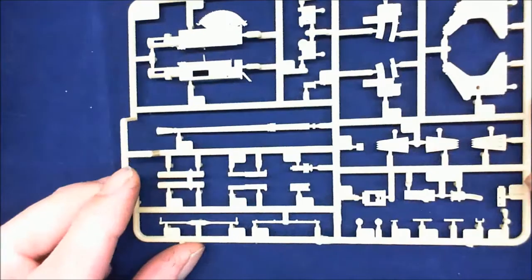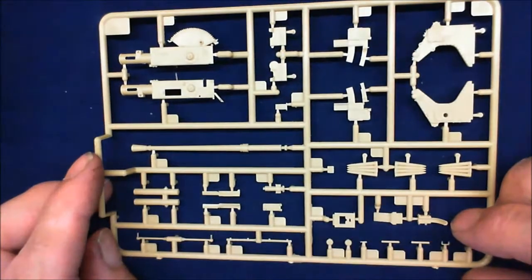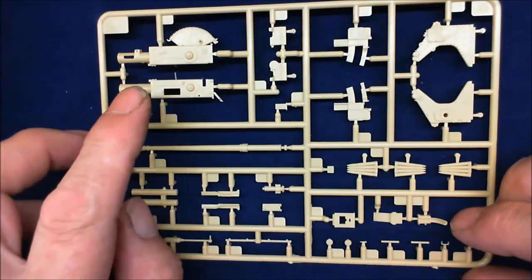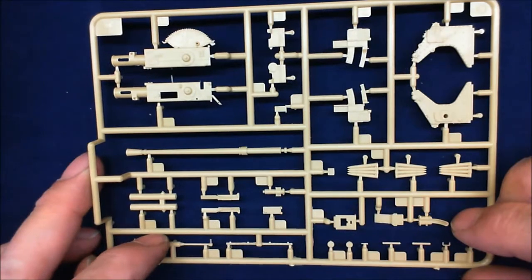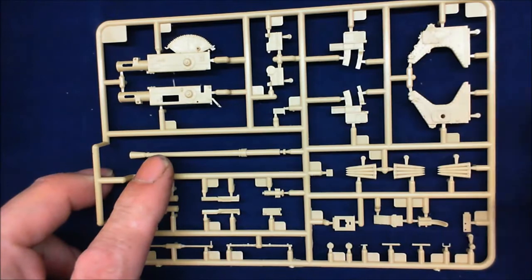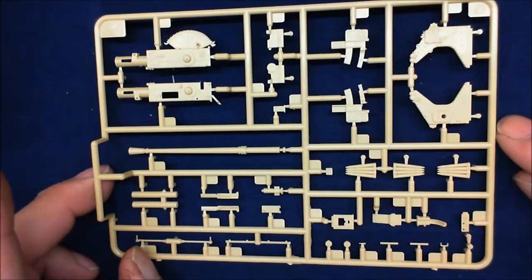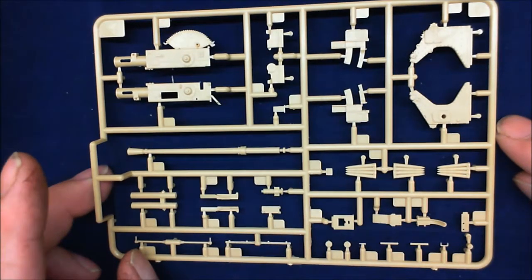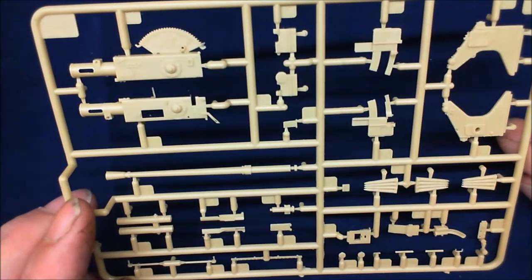On to the next one. We've got a breech, another barrel, ammo, side supports at the top there. All nice and clean, nice and tidy. Nice detailed.